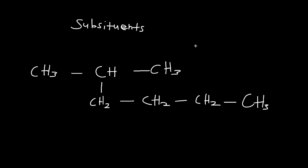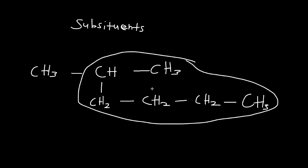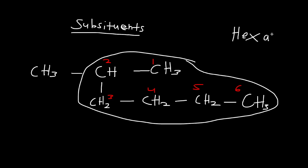If you look at a structure like a necklace, you circle the longest chain. In this example, would the top chain be the longest? No, because it only has three carbons — there are more at the bottom. So the longest chain would be the bottom path, and counting its carbons: one, two, three, four, five, six — it has six carbons. Six carbons is called hexane, and it has '-ane' at the end because they're all single bonds.